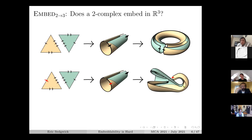These examples are actually not terribly interesting because they're both surfaces, and if I give you a surface then it's very easy to determine whether it's going to embed in R3, just by computing the Euler characteristic, the number of boundary components, and the number of components. Basically you don't want it to be closed and non-orientable - that would be bad.